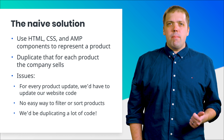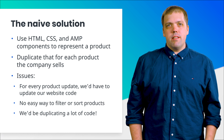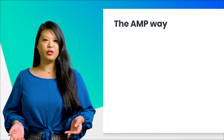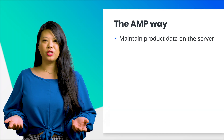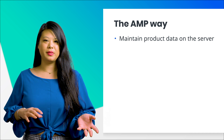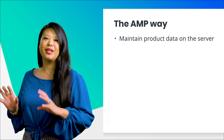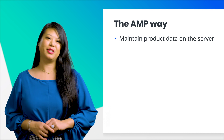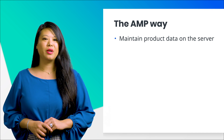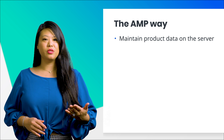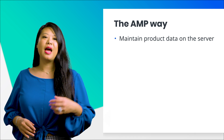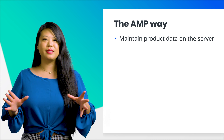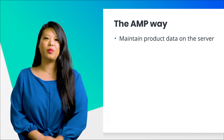So how does AMP help us work around these issues? For our proper AMP solution, we'll take all the product information out of our website code and maintain it on a server, independent from our site. When our site first loads, we'll contact the server, download the product data, and then display that data in a consistent way.